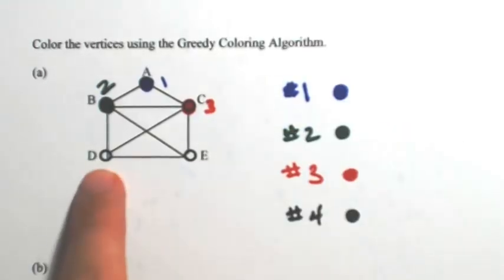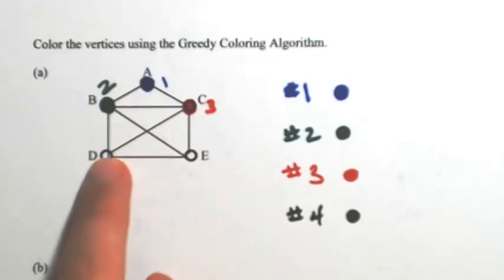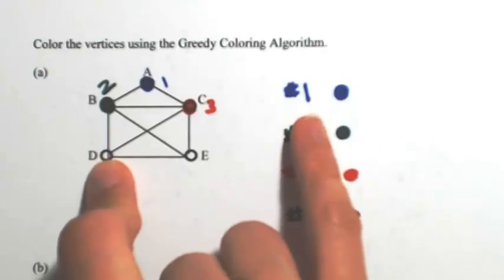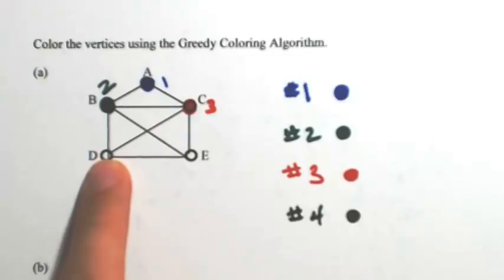The next letter is D. D is connected to color 2 and color 3. But before using 4, we're just going to go back to number 1 again. We're going to always go to the lowest color every time you can. So instead of using the 4, I'm going to use 1 again.